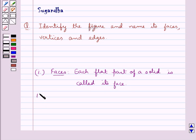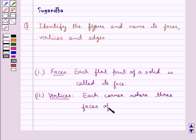Next is the definition for vertices: each corner where three faces of a solid meet